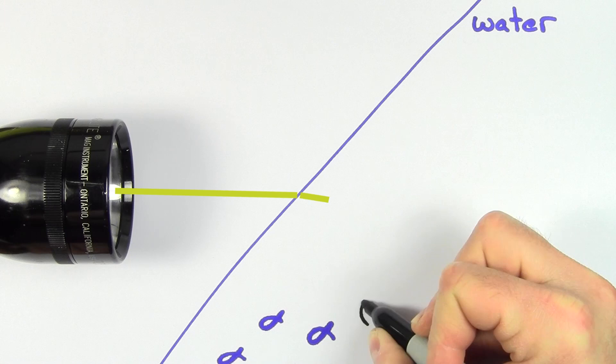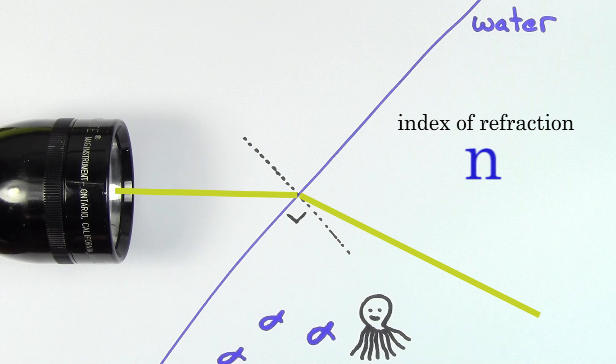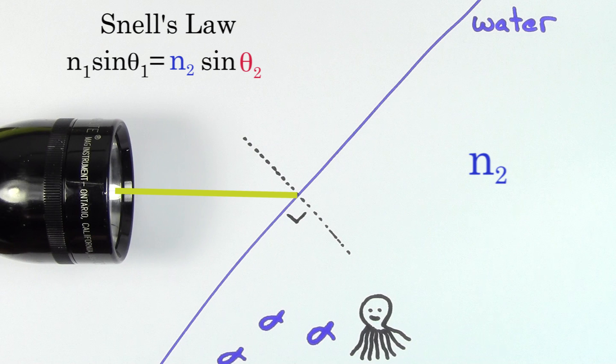Check out this ray of light. When it enters a new medium like water, its path will bend. The larger the index of refraction of the new medium, the more the light will bend from its initial direction in the air. This follows from Snell's Law.